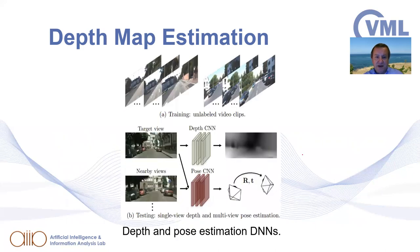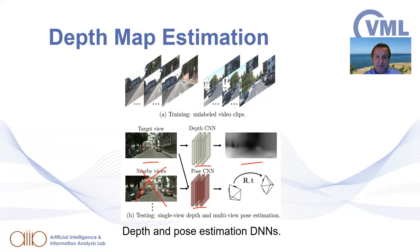For example, we have a target video view, one DNN that estimates depth, and another DNN that estimates pose. When the system is trained, we can essentially discard the pose estimation part of the network and just feed the depth DNN with the target view to get an estimate of the depth map.